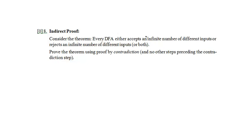The indirect proof question asks to prove: every DFA either accepts an infinite number of different inputs, or rejects an infinite number of different inputs, or both - using proof by contradiction with no other steps preceding the contradiction step. A proof can take a long time if you don't get the insight, but starting isn't that hard. The very first thing I'll do is negate the theorem and assume that negation; the last thing is find a contradiction. I know the rough structure, so I'll definitely come back to fill it in, but I'll keep a careful eye on time and skip it if I'm not making progress.